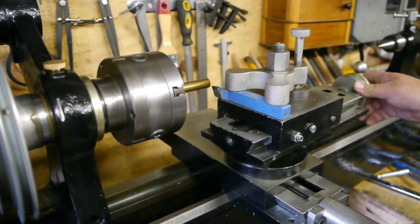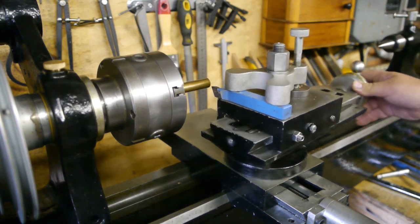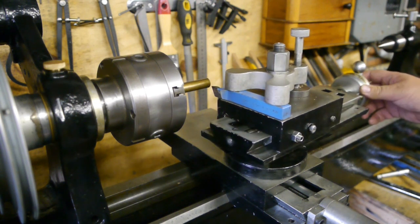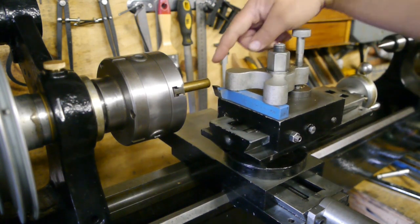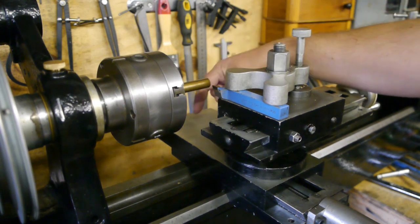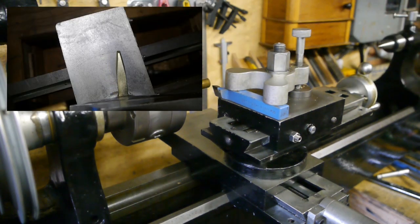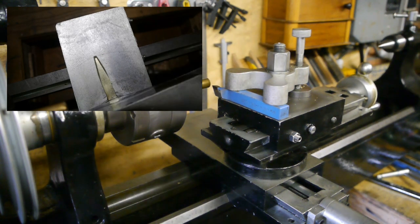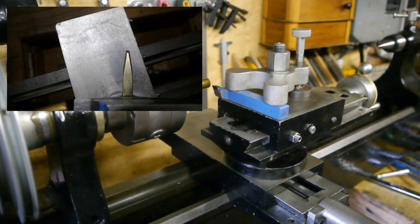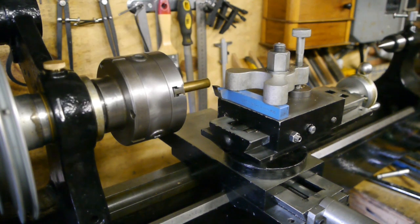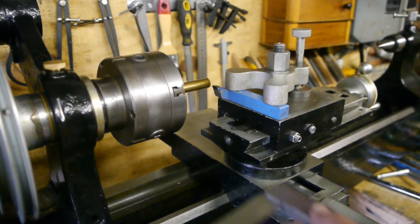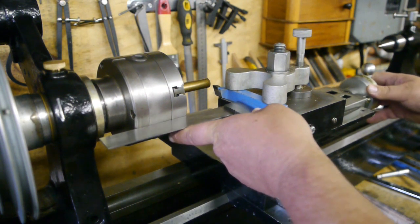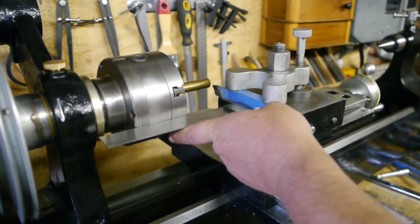Anyway it turns out I hadn't set up my top slide correctly. Now there is a protractor scale on the back of the cross slide but it's not very precise. It's hard to read and also the needle is bent to the right. So in order to set up the top slide parallel with the work I've been using a square but I guess that isn't good enough.